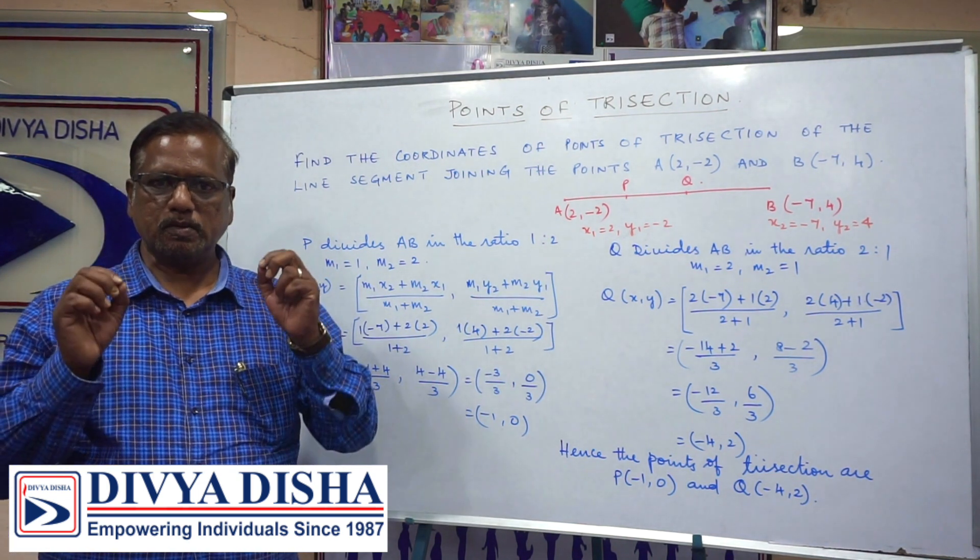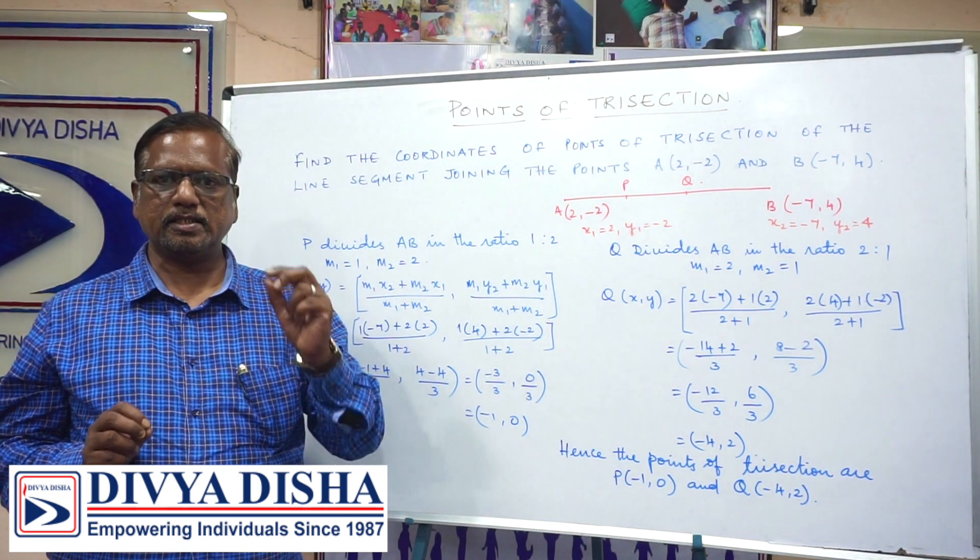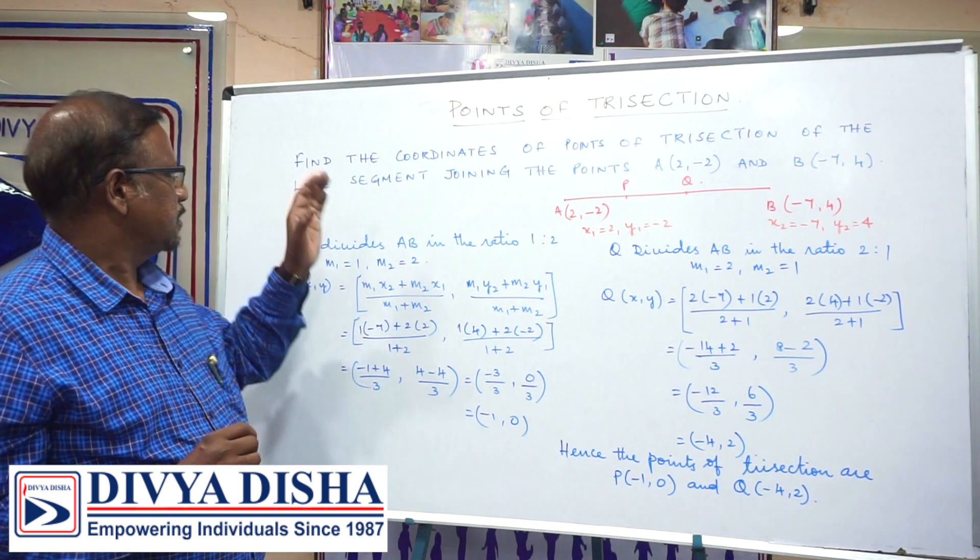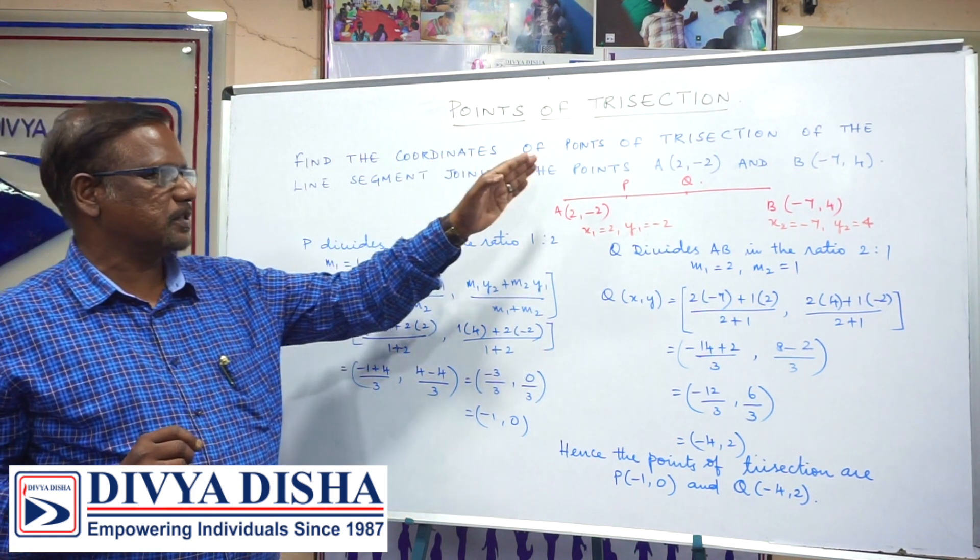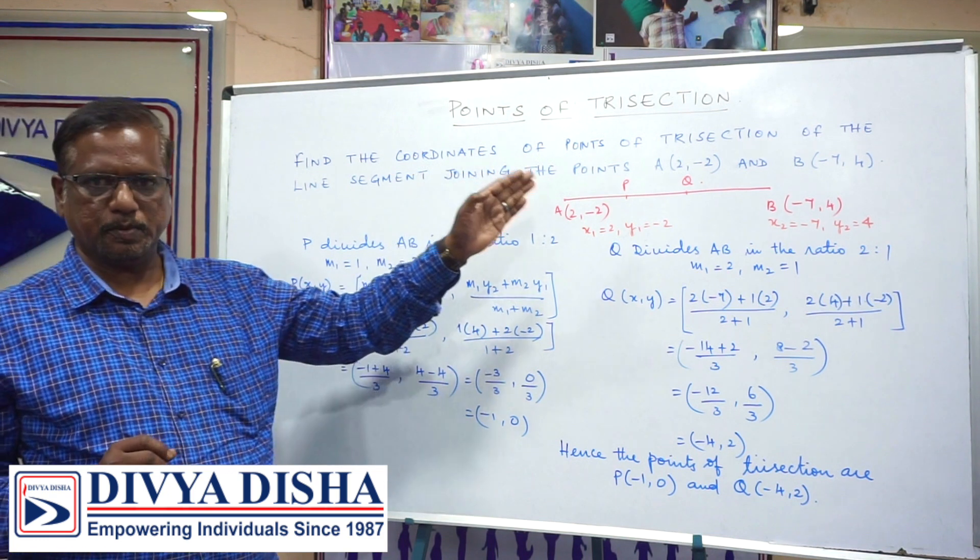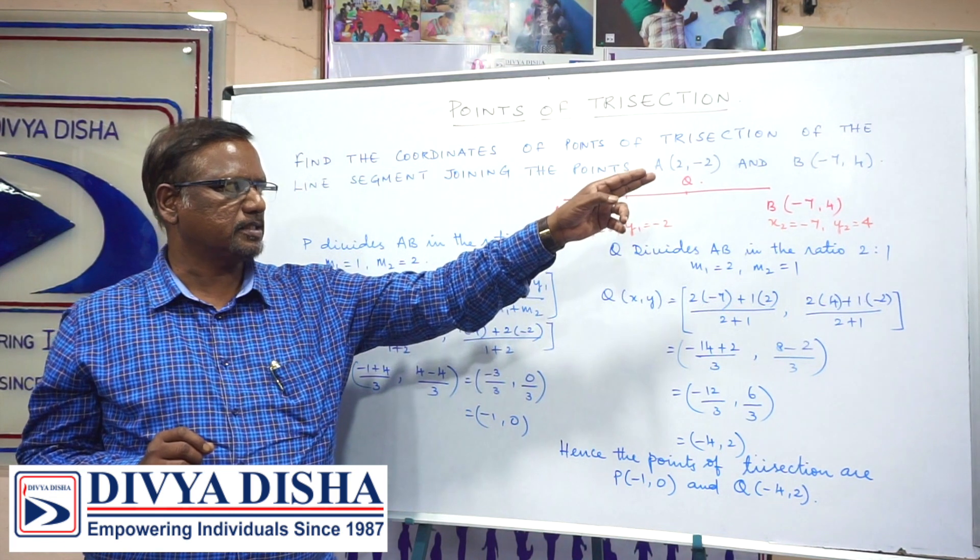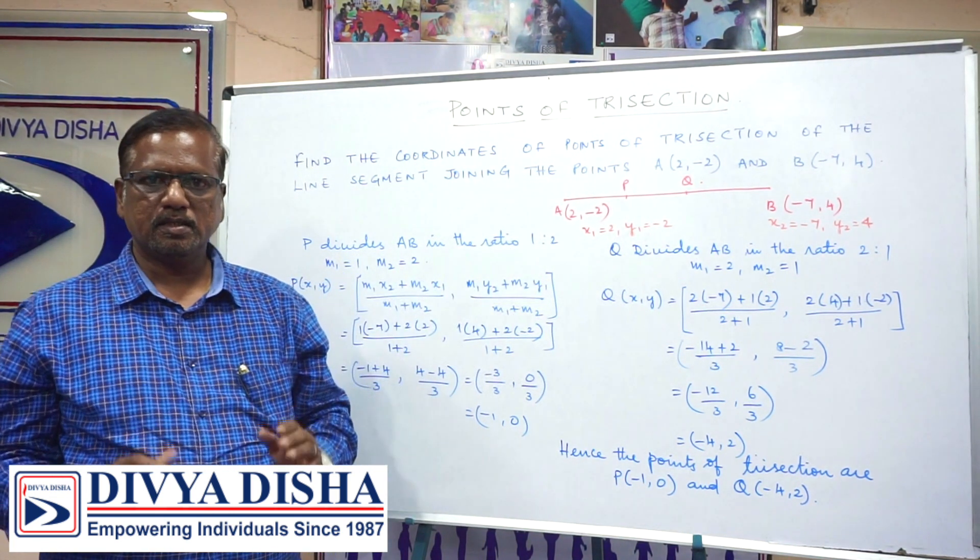This is the question paper. Find the coordinates of the points of trisection of the line segment joining the points A(2,2) and B(-7,4).